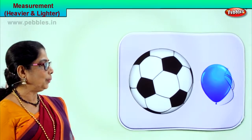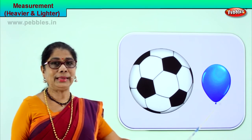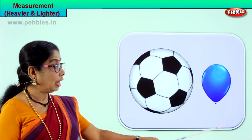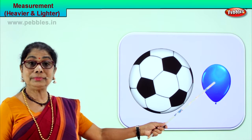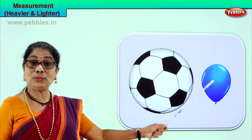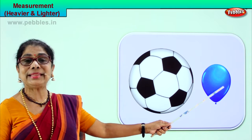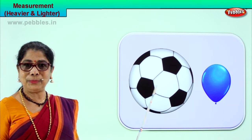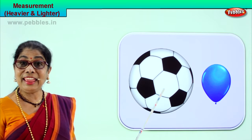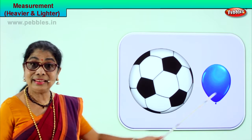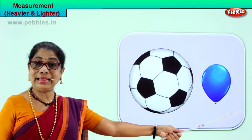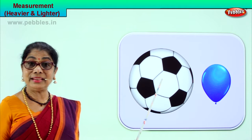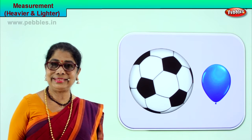Heavier, lighter. Let's look at another picture. See what we have here — we have two items: one is the football and one is the balloon. If you weigh them, the balloon is lighter than the football, and the football is heavier than the balloon.